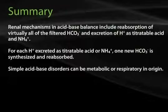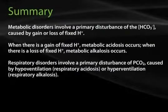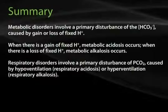Simple acid-base disorders can be metabolic or respiratory in origin. Metabolic disorders involve a primary disturbance of the bicarbonate, caused by a gain or loss of fixed hydrogen. When there is a gain of fixed hydrogen, metabolic acidosis occurs; and when there is a loss of fixed hydrogen, metabolic alkalosis occurs. Respiratory disorders involve a primary disturbance of PCO2, caused by hypoventilation leading to respiratory acidosis, or hyperventilation leading to respiratory alkalosis.